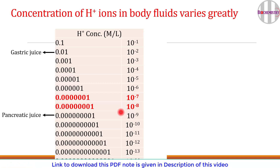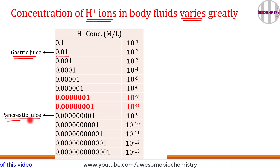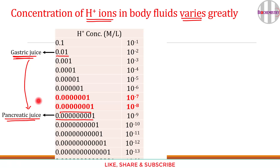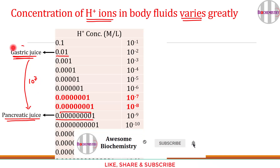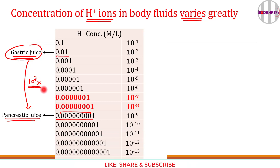The concentration of hydrogen ions in body fluids varies greatly. For example, gastric juice has an H⁺ concentration of 0.01 moles per liter, whereas pancreatic juice has a concentration of 0.0000001 moles per liter — with gastric juice containing 10 to the power of 7 times higher hydrogen ion concentration than pancreatic juice.